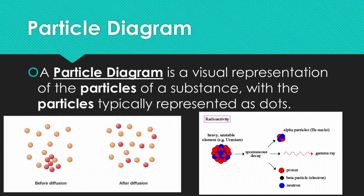A particle diagram is a visual representation of the particles of a substance with the particles typically represented as dots.